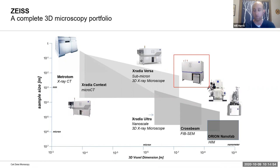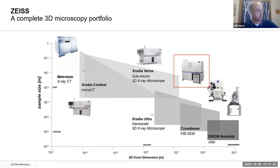I want to put things in context of the 3D imaging space. What I have plotted here is on the x-axis the 3D voxel dimension — voxel is nothing more than a three-dimensional pixel, equivalent to spatial resolution — and on the y-axis sample size, some kind of characteristic sample diameter. As you move from left to right, you go from imaging large volumes down to more targeted and narrower volumes.